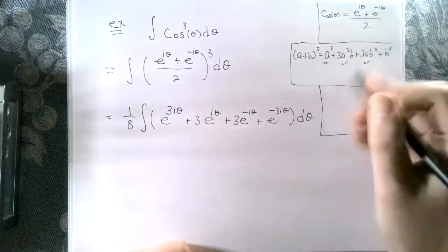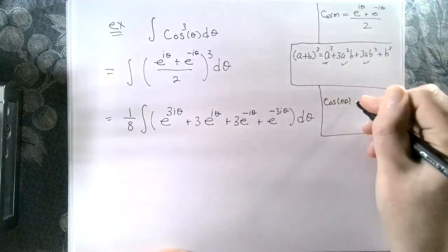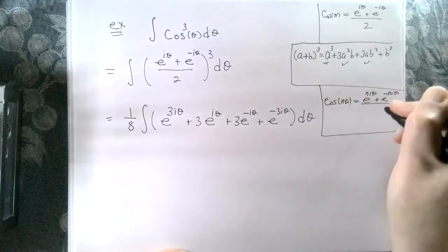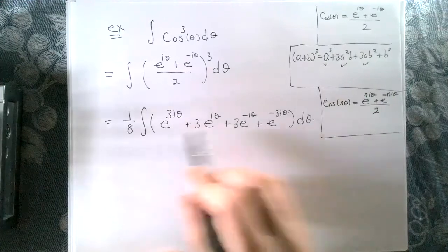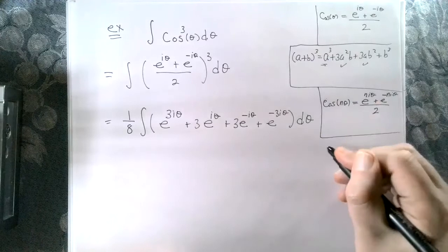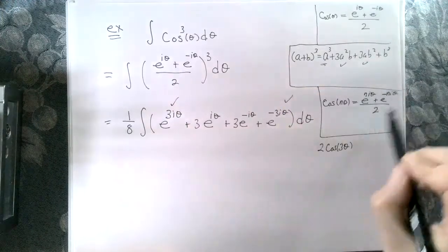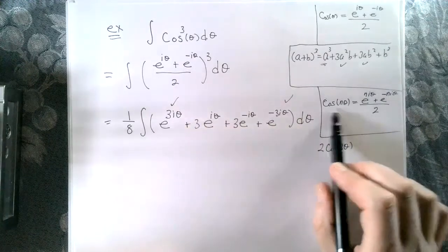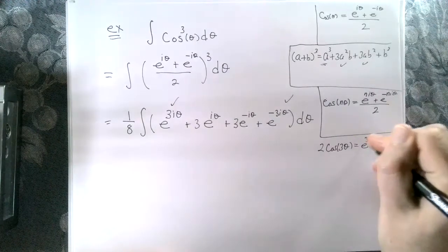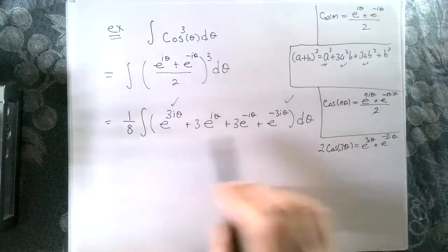Now we want to be clever and use the identity: cosine of n theta equals e to the ni theta plus e to the minus ni theta over two. That's pretty helpful here. With n equal to three, multiplying both sides by two gives two cosine of three theta equal to e to the 3i theta plus e to the minus 3i theta. So those first and last terms combine nicely.